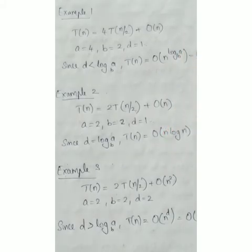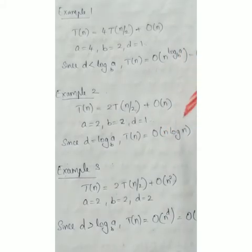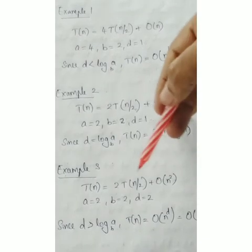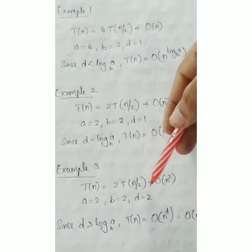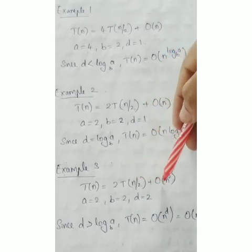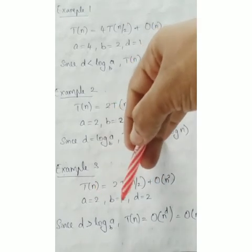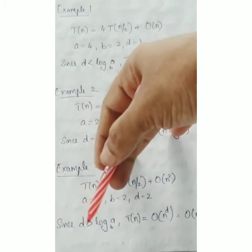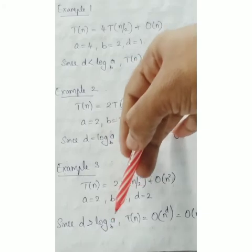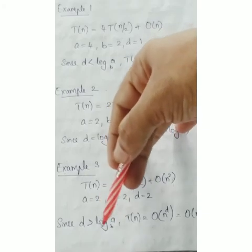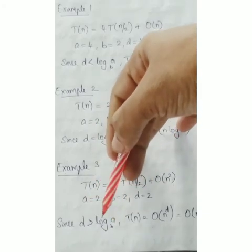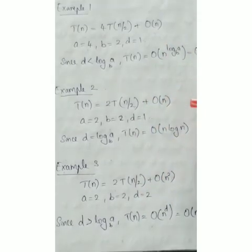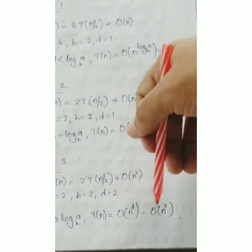Third example: T of n equal to 2T(n/2) plus Big O of n squared. Here a equals 2, b equals 2, d equals 2. Since d is greater than log a to the base b — that is 2 is greater than 1 — we apply the first case: T of n equals Big O of n raised to d, which is n squared.